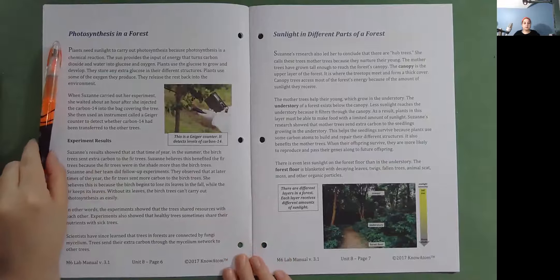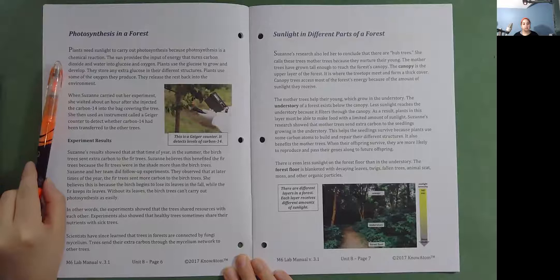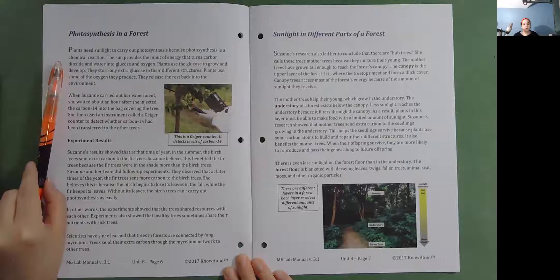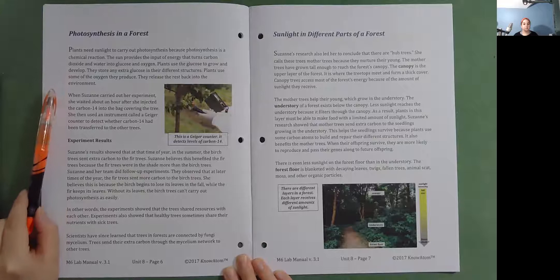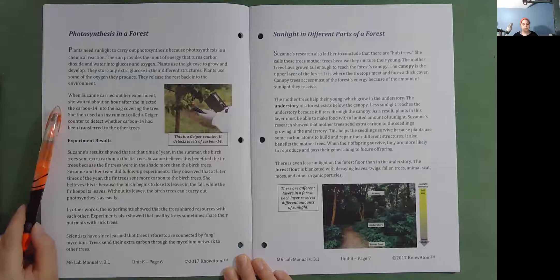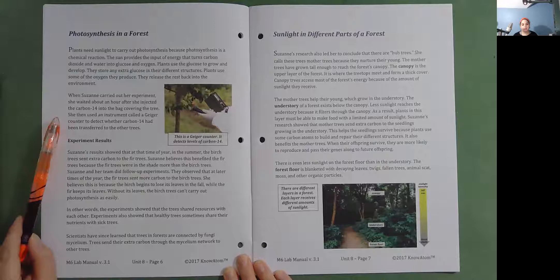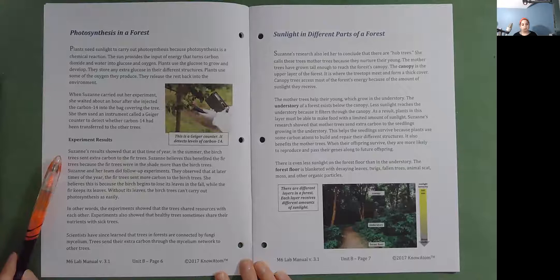Photosynthesis in a Forest. Plants need sunlight to carry out photosynthesis because photosynthesis is a chemical reaction. The sun provides the input of energy that turns carbon dioxide and water into glucose and oxygen. Plants use the glucose to grow and develop. They store any extra glucose in their different structures. When Suzanne carried out her experiment, she waited about an hour after she injected the carbon-14 into the bag covering the tree. She then used an instrument called a Geiger counter to detect whether carbon-14 had been transferred to the other trees. Suzanne's results showed that at the time of year, in the summer, the birch trees sent extra carbon to the fir trees.